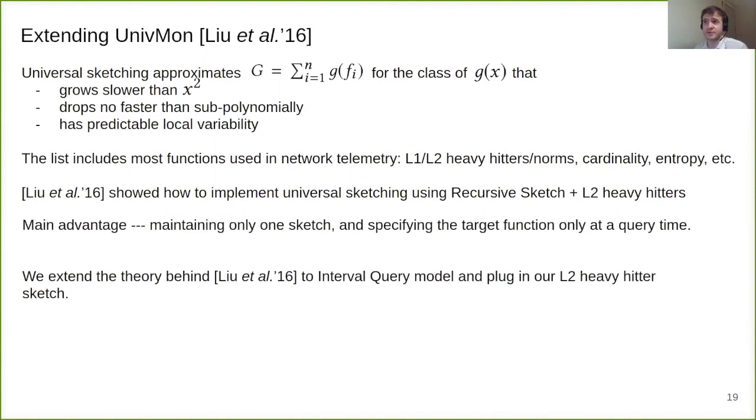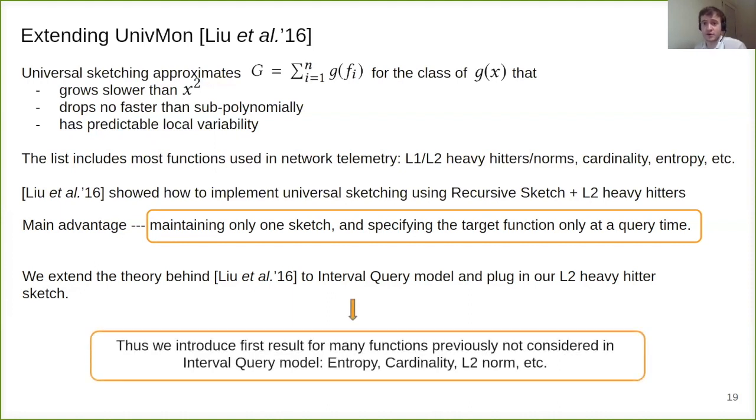Liu and colleagues in 2016 showed how to implement universal sketching using recursive sketch plus L2 heavy hitters. Main advantage of this result is that maintaining only one sketch and specifying the target function only at query time. We extend the theory behind the Univmon to interval query model and plug in our L2 heavy hitter as a black box such that we get algorithms estimating entropy, cardinality, L2 norm, and so on. Those are the first results for the interval query model, not present previously in the community.